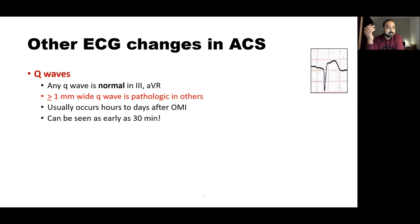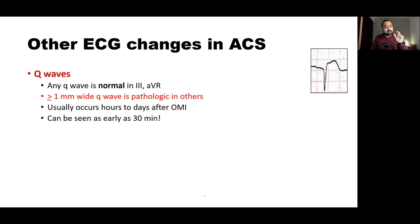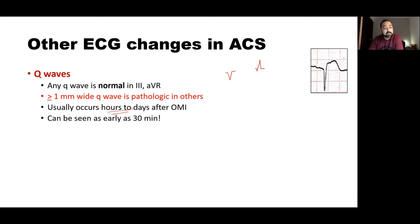Regarding Q waves: any amount of Q wave is normal in lead 3 and lead AVR, but if a Q wave is present in any other lead and is at least 1 mm wide, it is pathological. Q waves usually develop some hours to days after an occlusion MI, but can sometimes be seen as early as 30 minutes after coronary occlusion. The presence of Q waves does not mean infarction is completed and is not an indication to withhold reperfusion therapy.